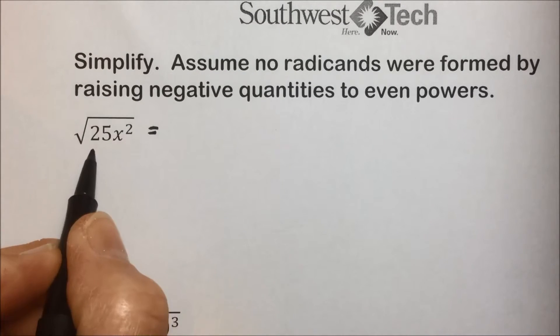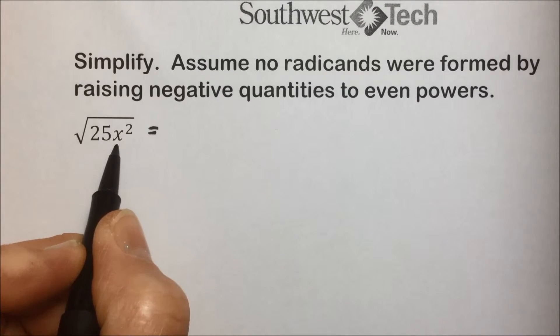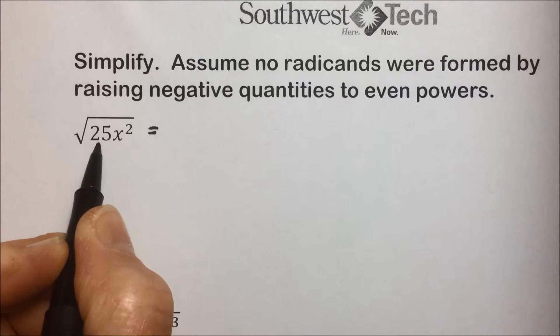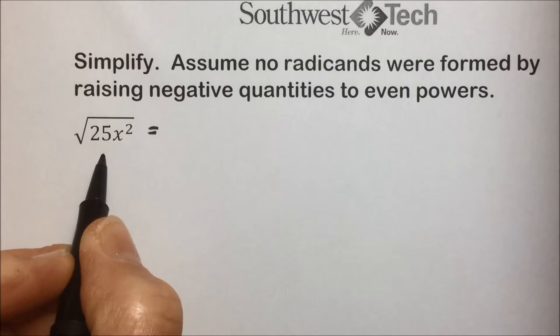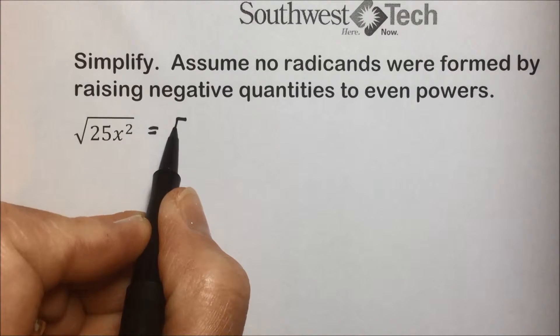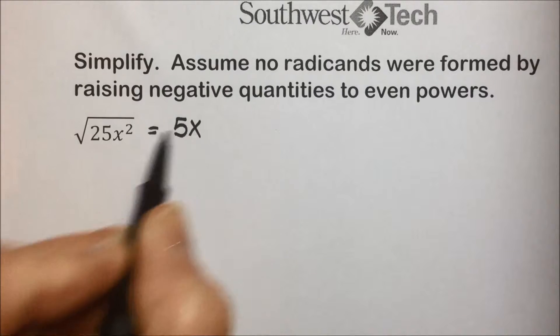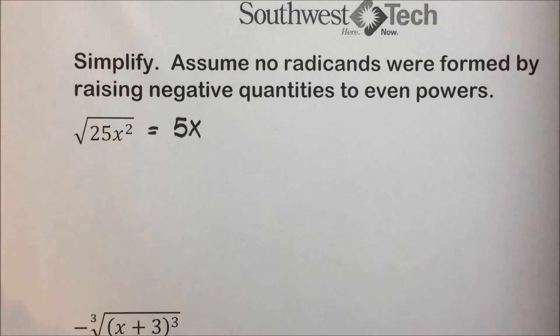We can answer it simply by putting the answer of what number, or in this case expression, times itself gives us 25x². Since 5 times x times 5x is 25x², we have simplified the problem.